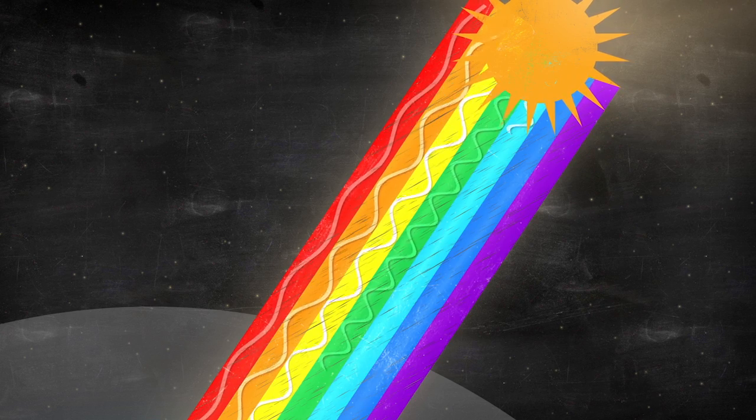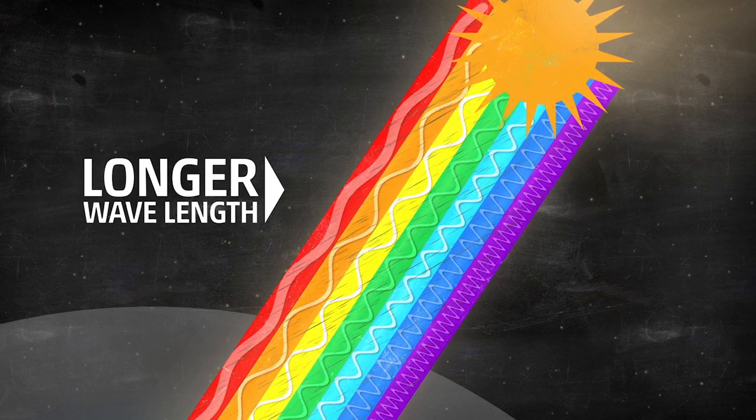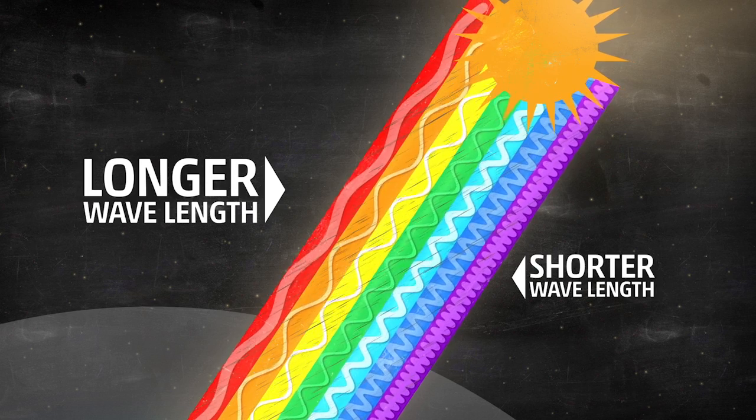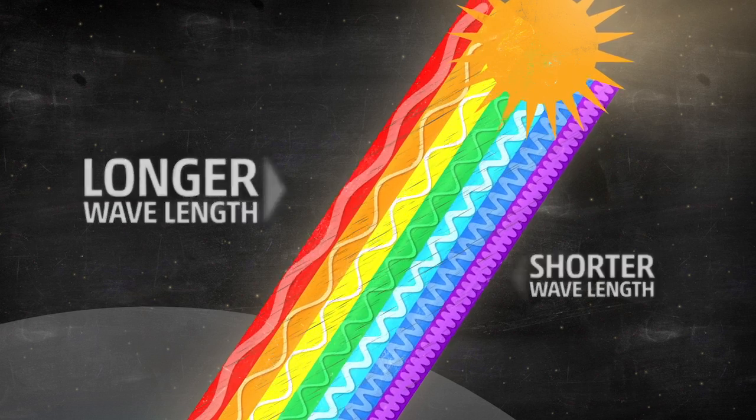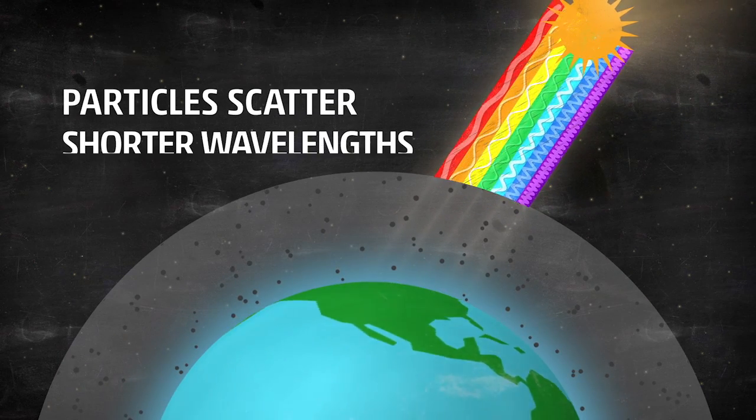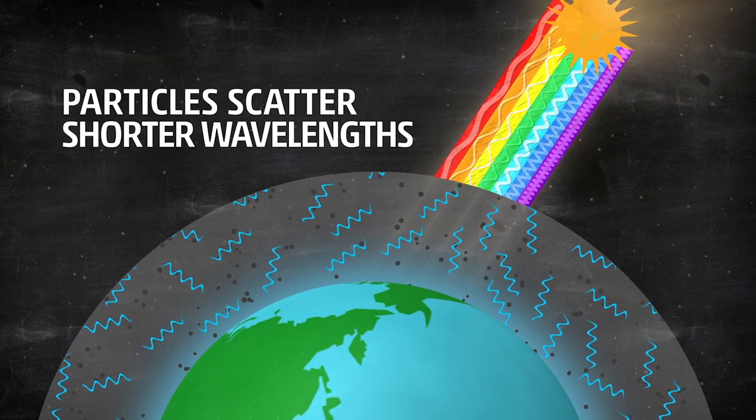color has its own wavelength. Red light has the longest wavelength, while blue and purple have the shorter wavelengths. As light moves through the atmosphere, it bumps into air molecules and dust particles which scatter shorter wavelength colors in all